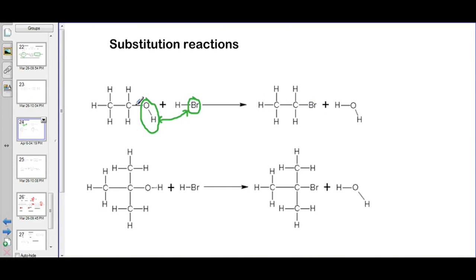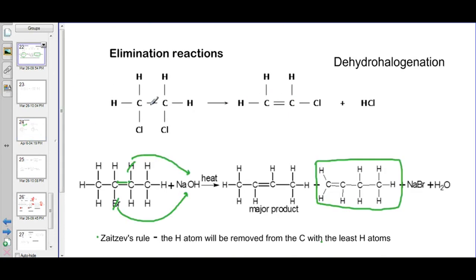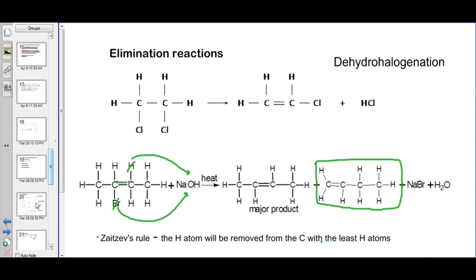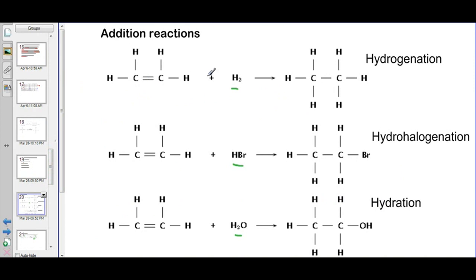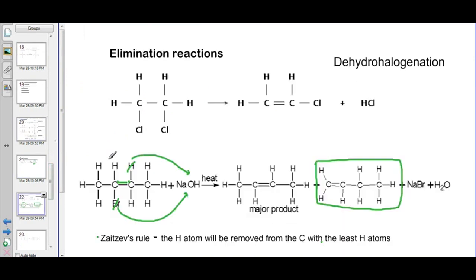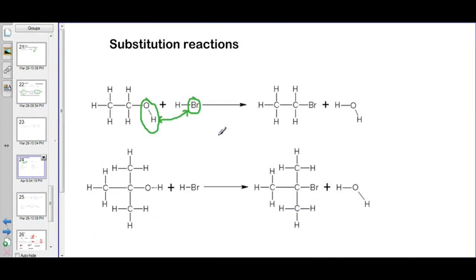It is easy to identify a substitution reaction: we have single bonds as reactants and single bonds as products — no change from single to double bonds. In elimination reactions, single bonds become double bonds because certain atoms are removed. In addition reactions, double bonds become single bonds. So: addition has double bonds becoming single bonds, elimination has single bonds becoming double bonds, and substitution has single bonds remaining as single bonds.